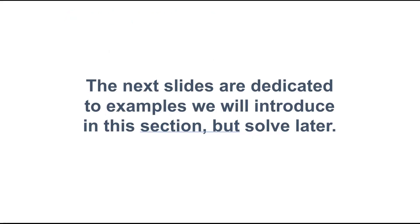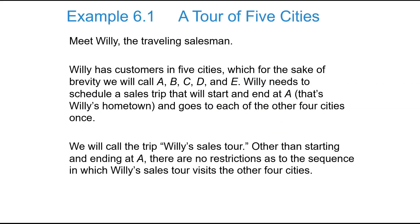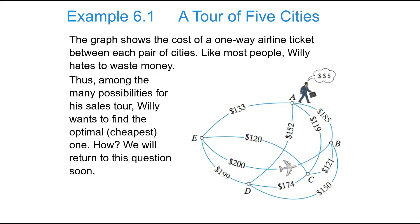So we're not going to actually solve the following problems, but we will throughout the module. So a tour of five cities. Willie, this is the famous traveling salesman problem. Willie has customers in five cities, A, B, C, D, E. And he needs to schedule a sales trip that starts and ends at A. That's his hometown and goes to each of the other four cities. Other than starting and ending at A, there's no restrictions. This graph shows the cost of one-way airline tickets between each pair of cities. Like most people, Willie hates to waste money. Thus, among the possibilities for a sales tour, Willie wants to find the optimal cheapest one. How? Well, we'll return to that question throughout the module.